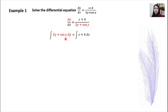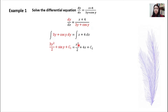For the left-hand side, you integrate with respect to y. So 3y gives you 3y squared over 2, and cos y gives you sine y. Don't forget to write plus c. For the right-hand side, you integrate with respect to x. So x gives you x squared over 2, and 4 gives you 4x. Don't forget to write plus c.